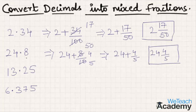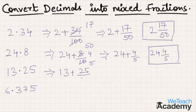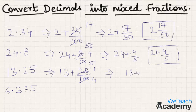Now let us consider the third example, 13.25. The expanded form can be written as 13 plus the decimal part 25 by 100. Since we have two decimal places we are dividing by 100. Simplifying, 25 times 1 is 25 and 25 times 4 is 100. That is 13 1 by 4, and 13 1 by 4 is the mixed fraction form of 13.25.